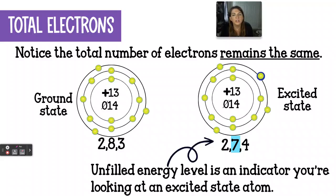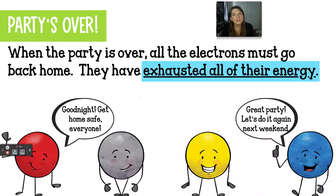Unfilled energy level, the seven here, is an indicator that you're looking at an excited state atom. Remember the Aufbau principle? Electrons want to get as close to the nucleus as possible. Well, the fact that we have an empty space in the second energy level, it's supposed to hold eight. But in this case here, it's only holding seven. That tells me something's wrong here. It must be excited because this is not a normal state for aluminum to be in. The amount of energy that that aluminum atom has is not sustainable. Eventually the nucleus grabs onto that electron and pulls it back to the second energy level where it's supposed to be.